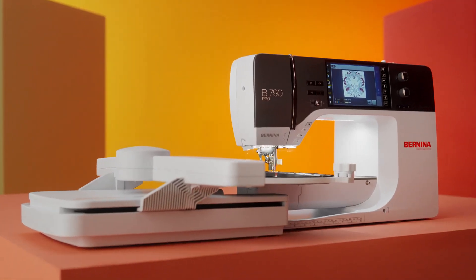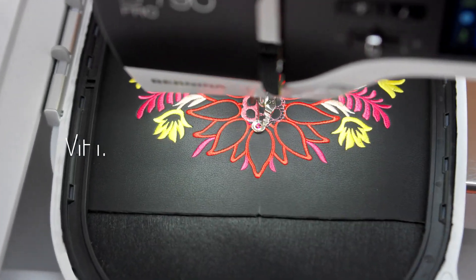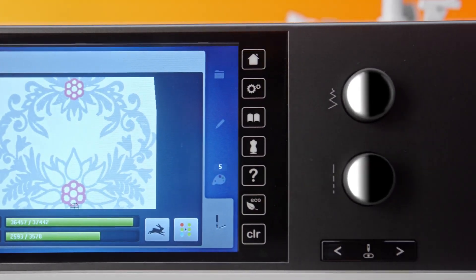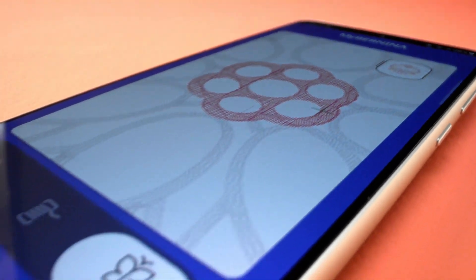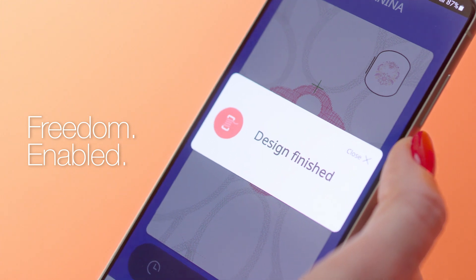Experience the joy of freedom. Wi-Fi now connects the B790 Pro directly to Bernina Embroidery Software 9 to transfer embroidery designs or connect to the Bernina Stitch Out app. You can monitor embroidery progress and thread colors remotely and receive notifications when your attention is needed.